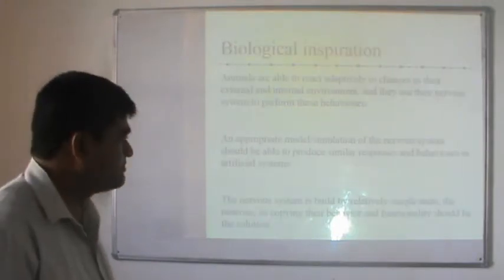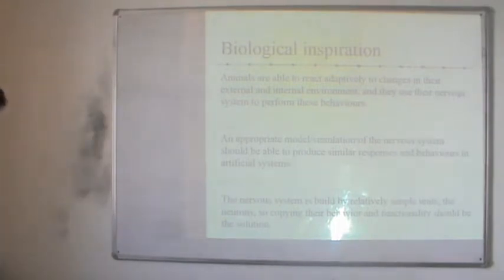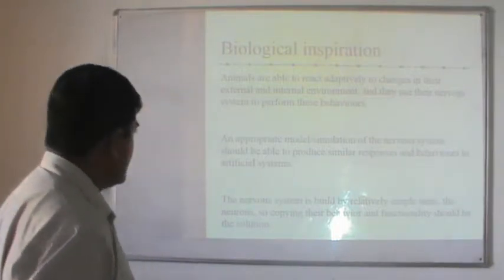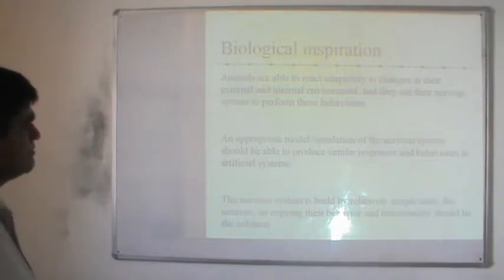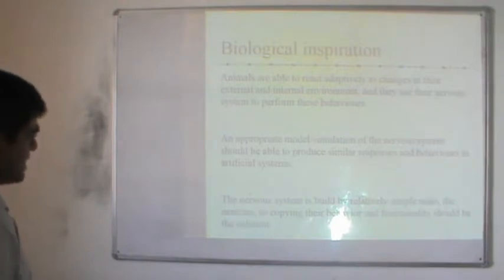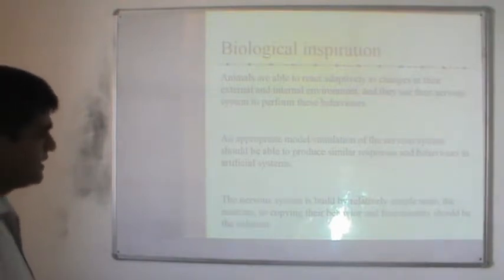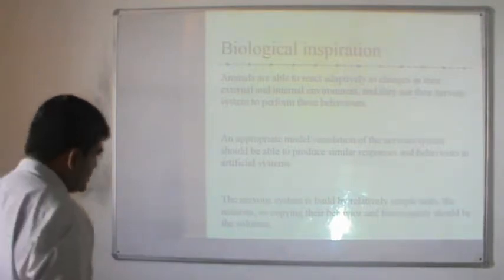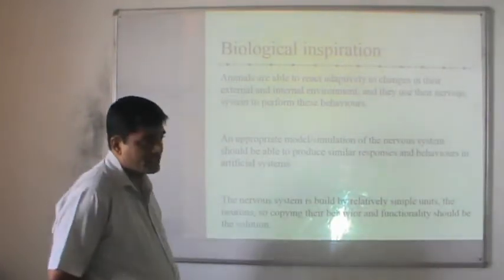What is the biological inspiration regarding neurons? Animals are able to react adaptively to changes in their external and internal environment, and they use their nervous system to perform these behaviors. An appropriate model simulation of the nervous system should be able to produce similar responses and behaviors in artificial systems. The nervous system is built by relatively simple units, and copying their behavior and functionality should be the solution.